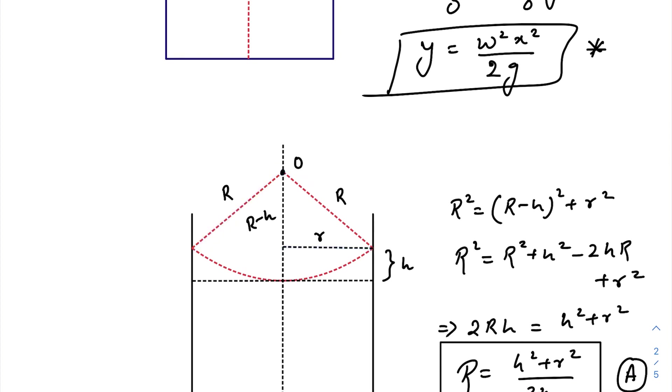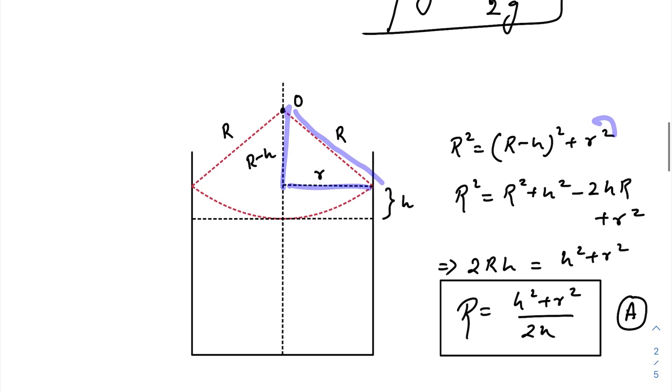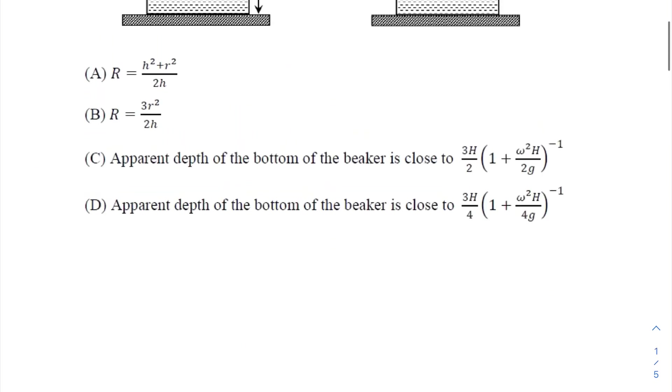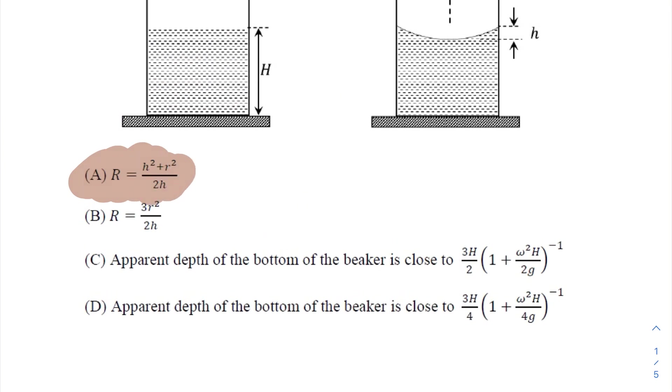So this one will be capital R minus h. Now just use Pythagoras theorem here: R² = (R-h)² + r². Now just square it, break this one, R² gets cancelled out, you will get the expression of capital R as this one. So option A is matching, so option A is correct. Very nice, so we do not have to check option B.